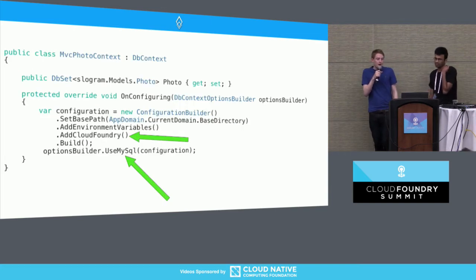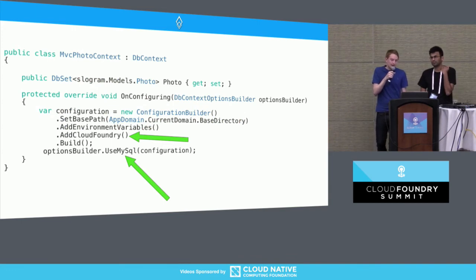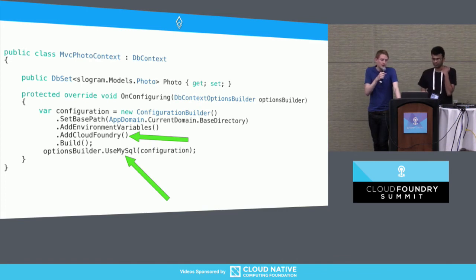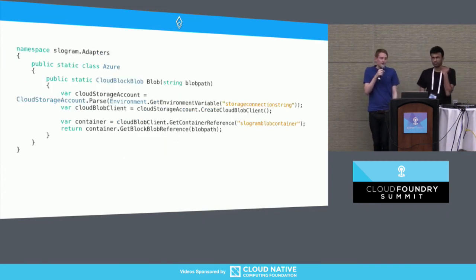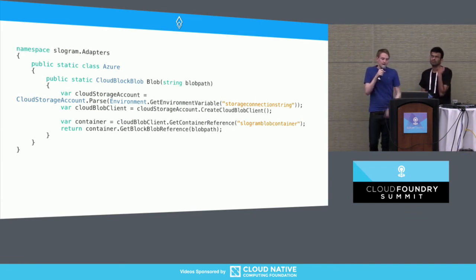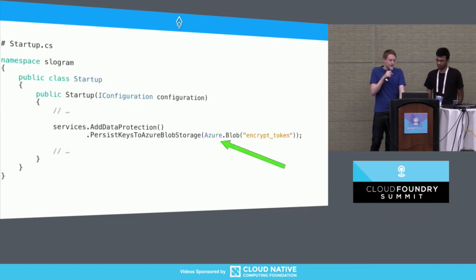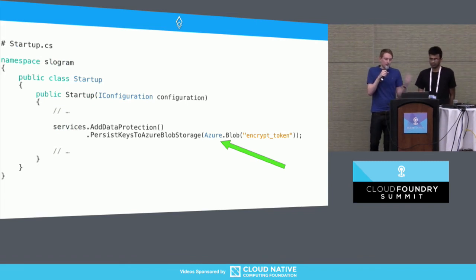That solves the database problem, but there's still the issue of local file system usage — both for storing images and for the data protection keys Jatin mentioned. We've created an adapter class that provides a connection into Azure Blob Store. It could potentially have been built as a Cloud Foundry service to attach to the application, but we couldn't find one so we did it ourselves. All we need to do is call azure.blob, and rather than storing information on the local file system, it's now in a remote blob store.